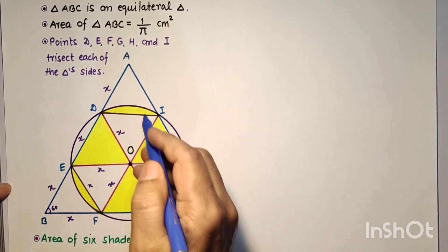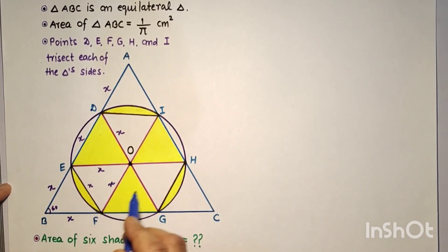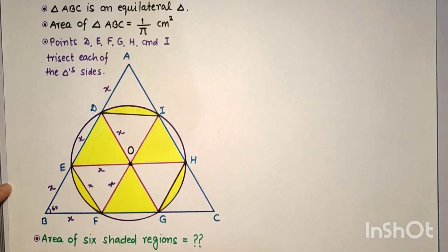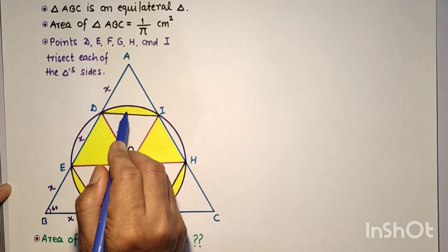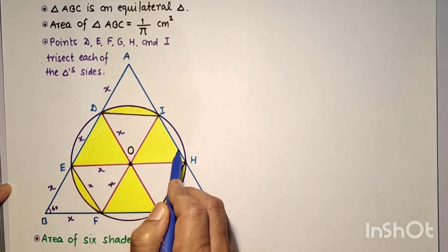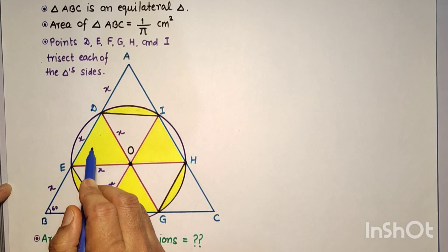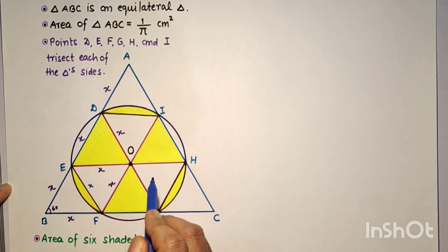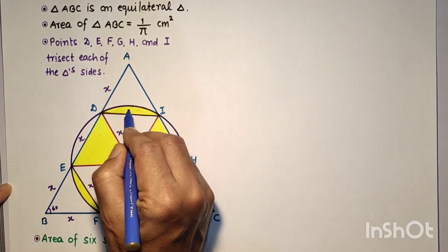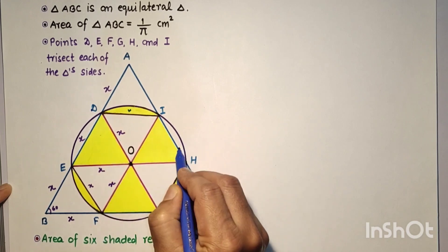To find the area of the yellow shaded portion, if we cut this area and paste it over here, and cut this part and paste it over here, and this part cut and paste over here, this will form a semicircle.